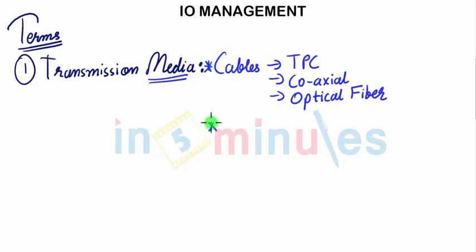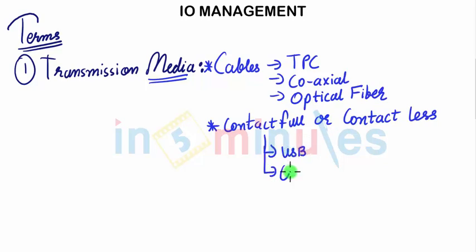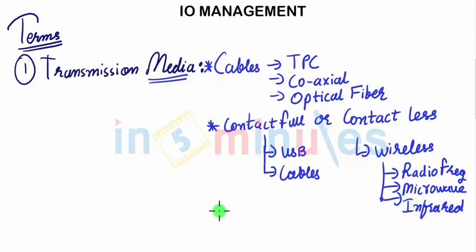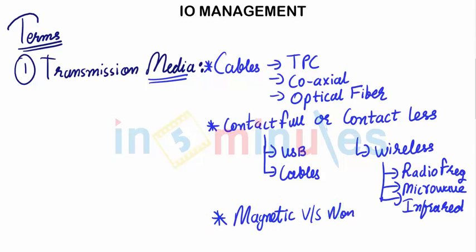Another way of categorizing transmission media would be contactful or contactless. Contactful includes USB drives and cables, whereas contactless refers to wireless. Together, transmission media can be contactful — which includes cables — and contactless — which doesn't require any kind of cables.